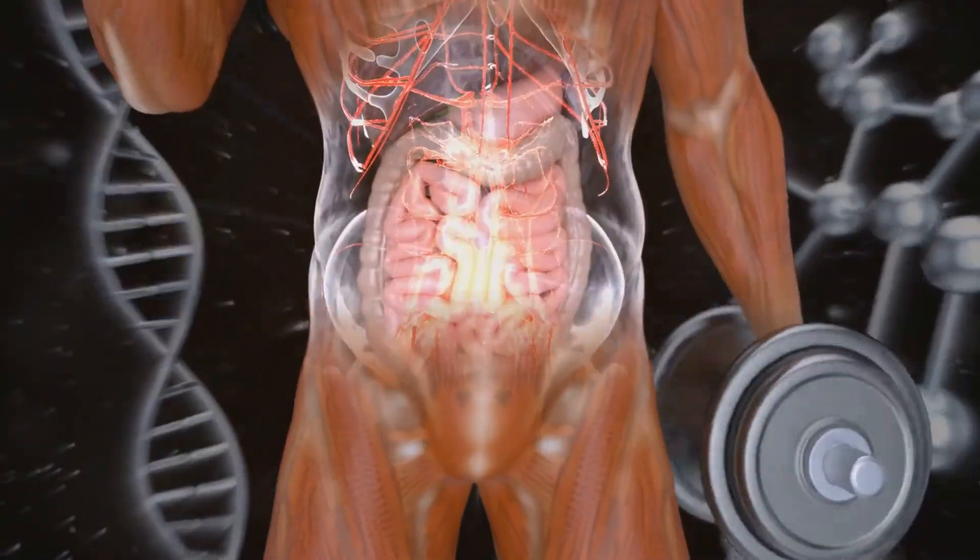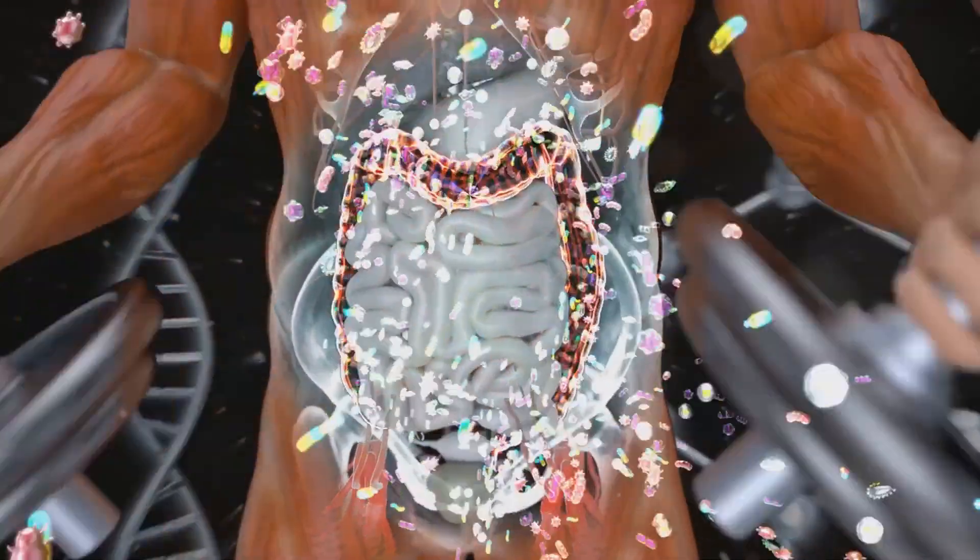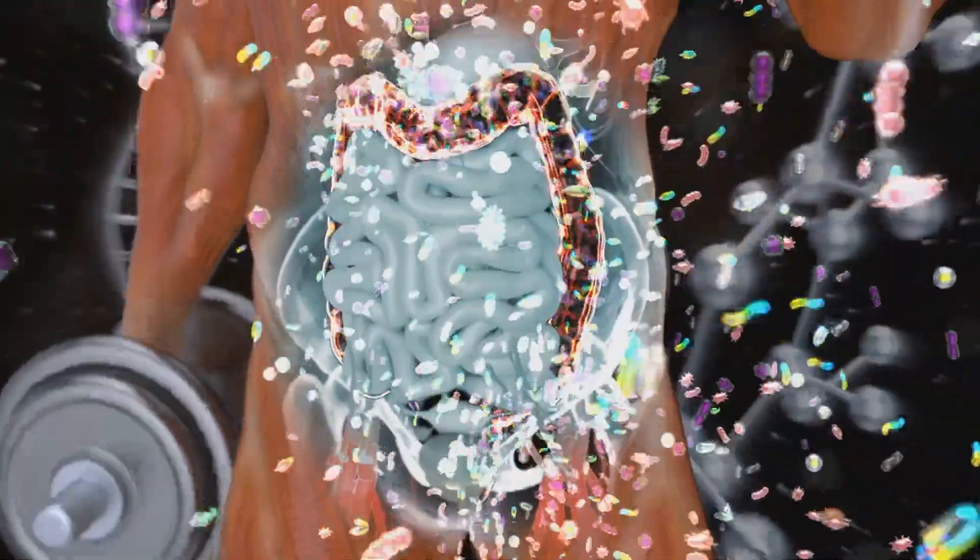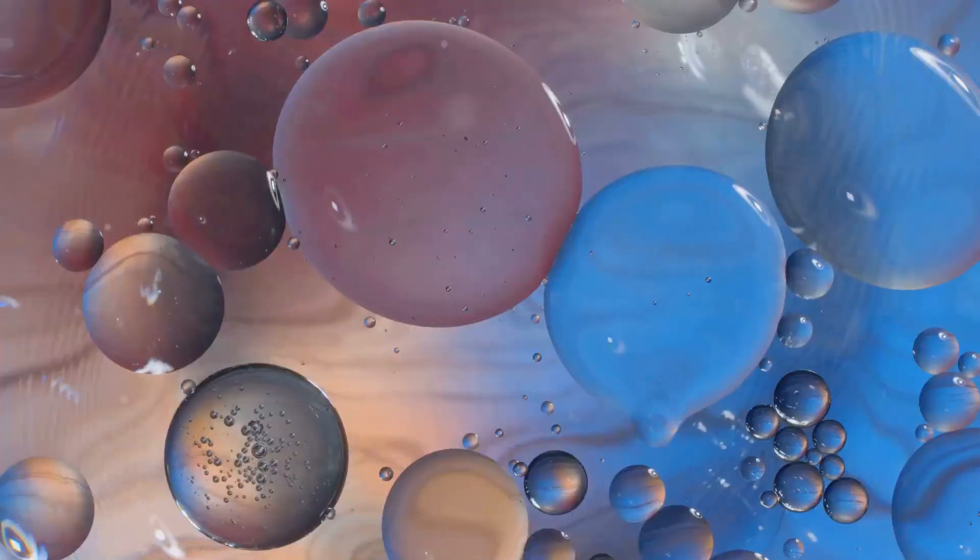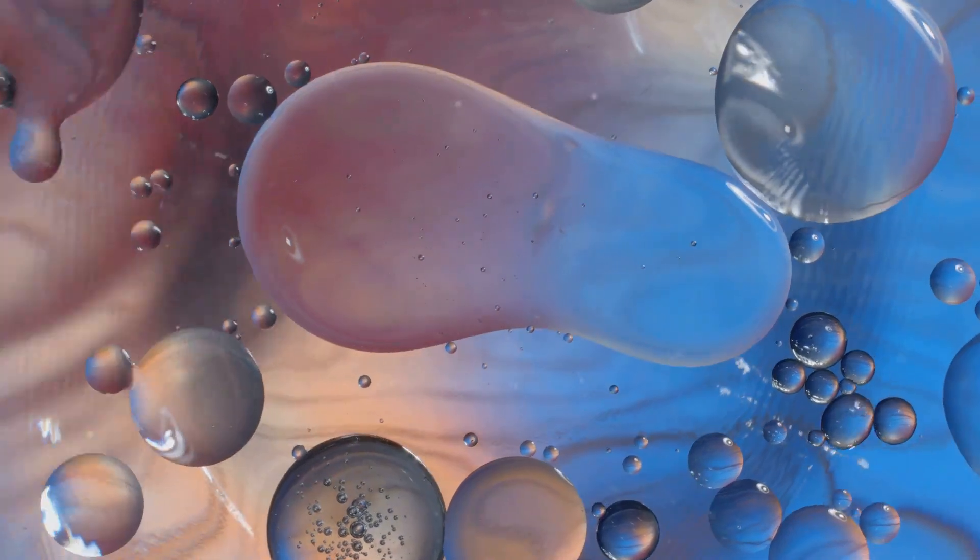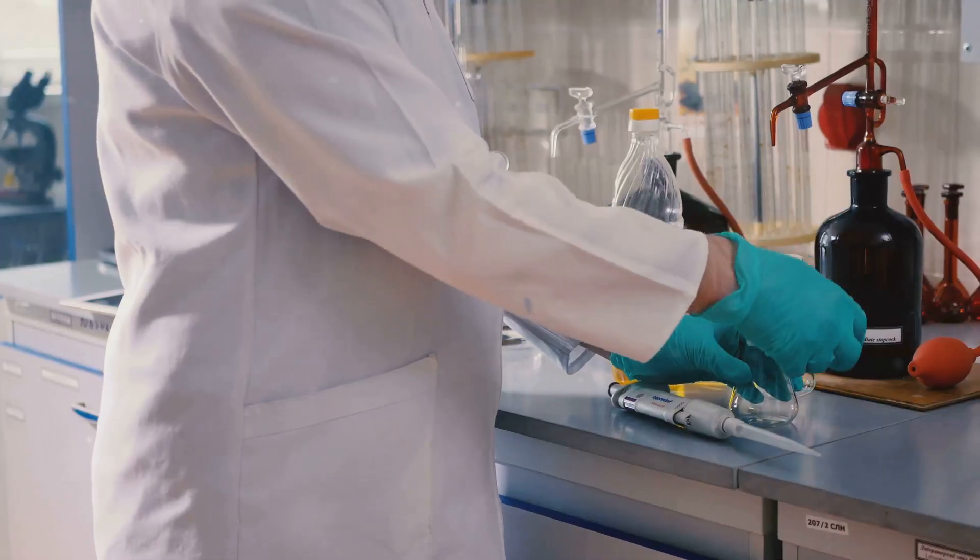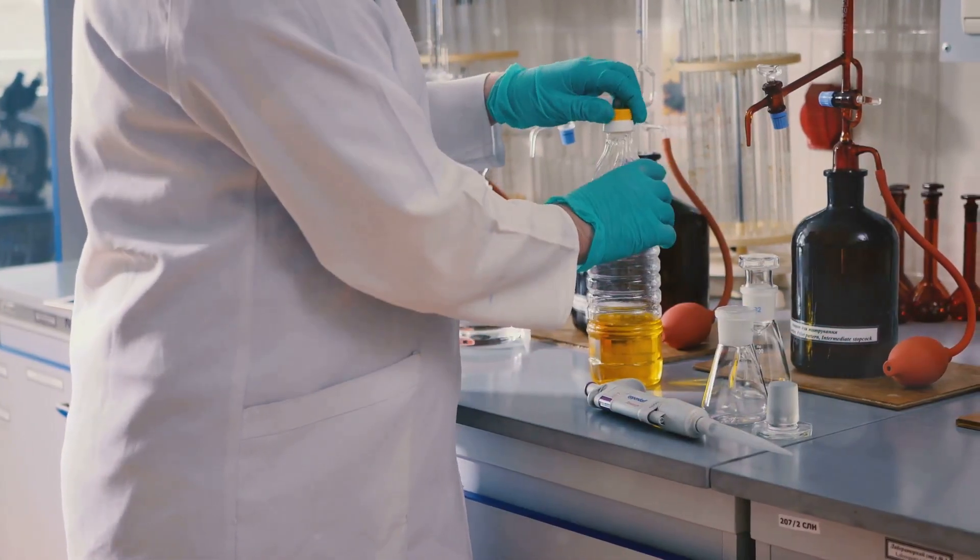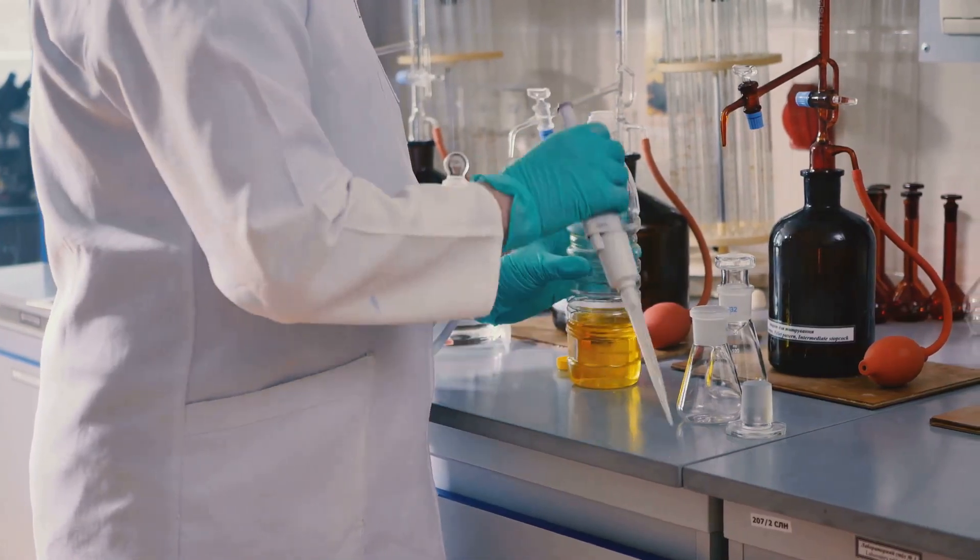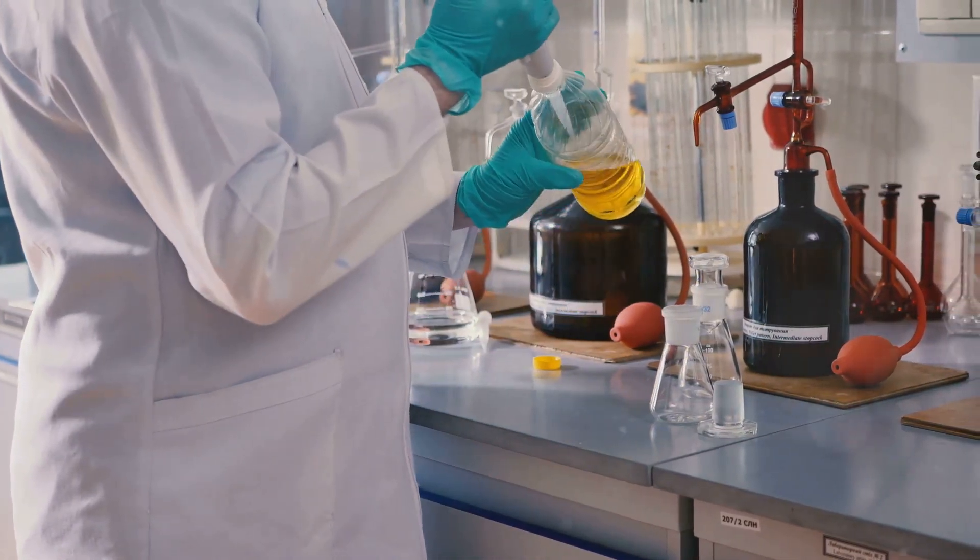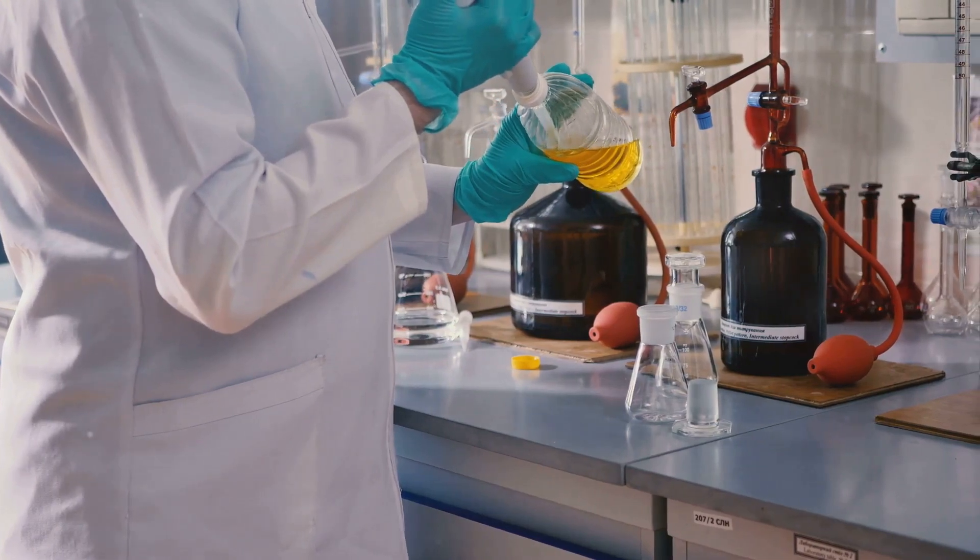The gut microbiota plays a critical role in shaping and regulating our immune system, acting as a first line of defense against harmful invaders. About 70 percent of our immune cells reside in the gut, constantly interacting with the resident microbes. This constant interaction trains our immune system to distinguish between harmless and harmful substances, ensuring that it responds appropriately to threats.